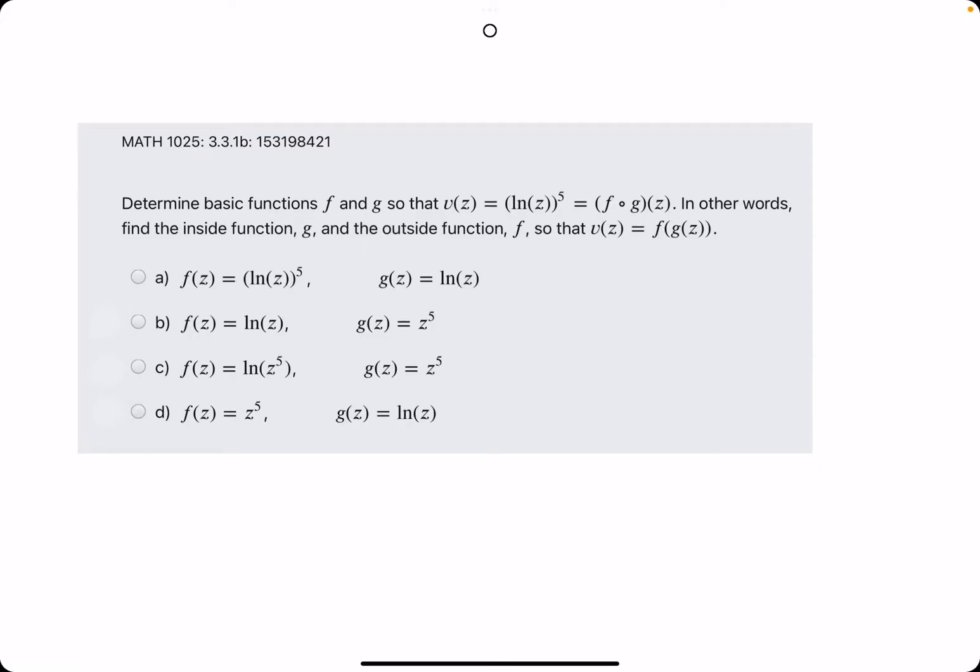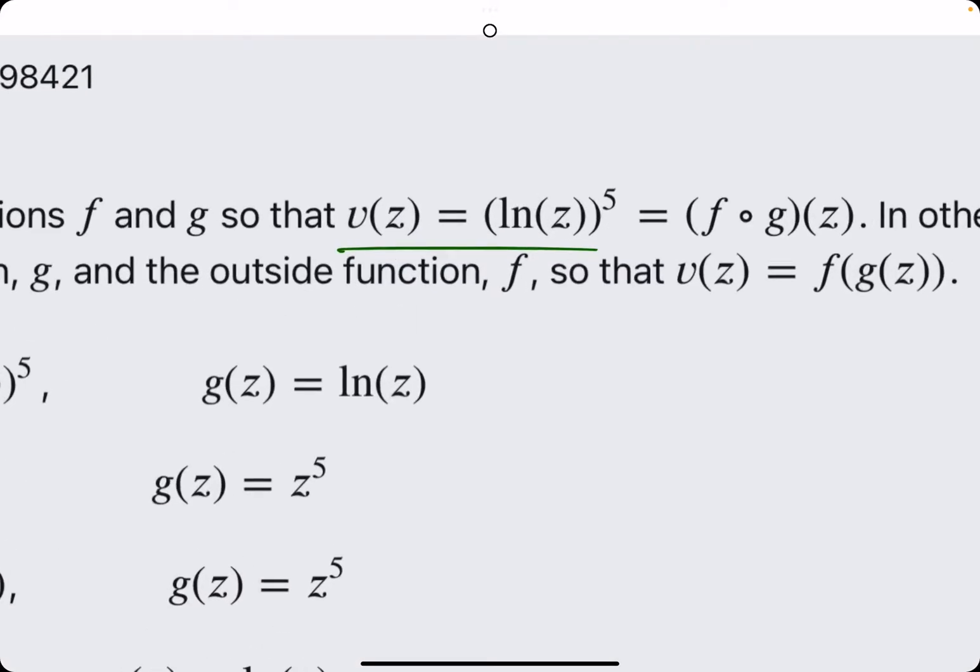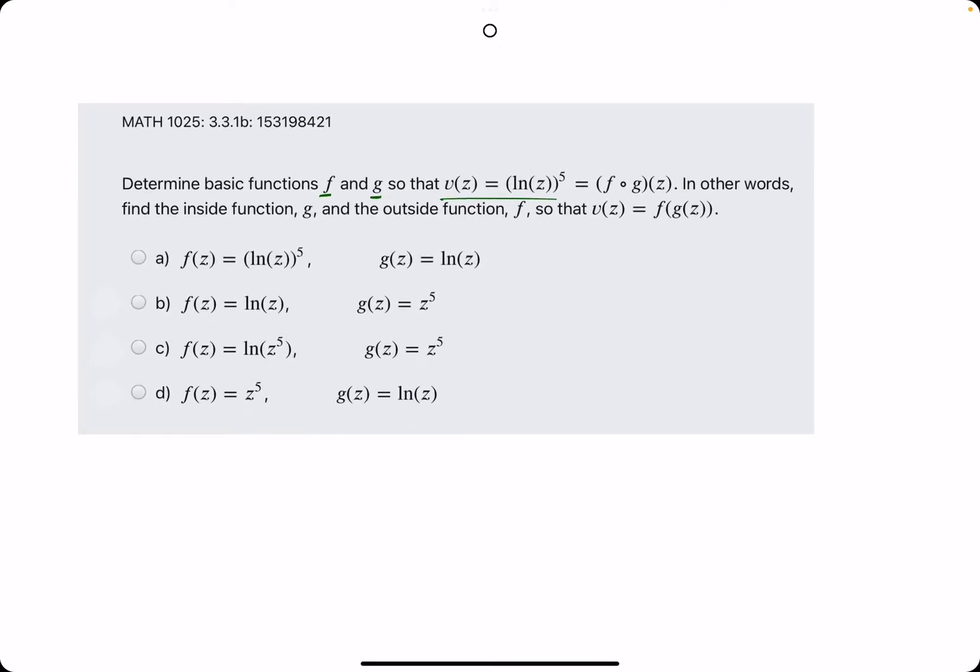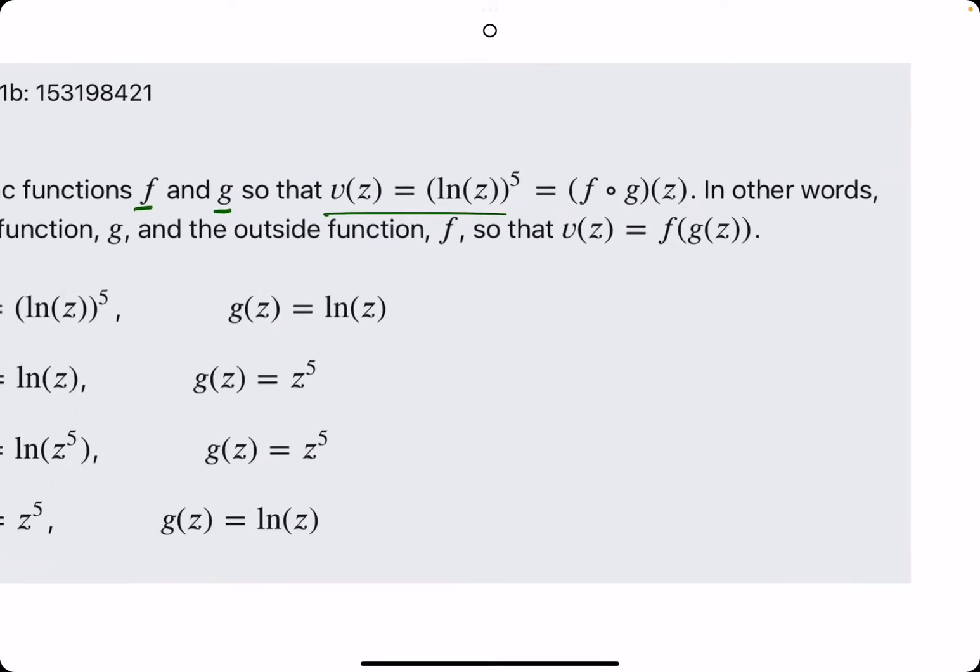In this problem, they give us a function v of z that is ln of z to the fifth, and they ask us to determine what f and g must have been in order to construct the function v, that is f of g of z.